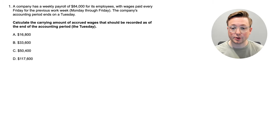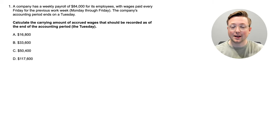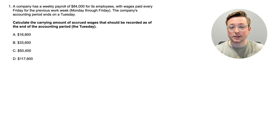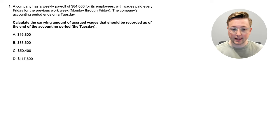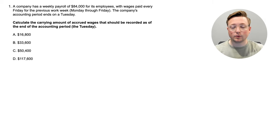Calculate the carrying amount of accrued wages that should be recorded as of the end of the accounting period, Tuesday. A company has a weekly payroll of $84,000 for its employees with wages paid every Friday for the previous work week, Monday through Friday. The company's accounting period ends on Tuesday. So we have to figure out how much wages they've accrued without having paid them as of Tuesday, which is likely month end. We're diving straight into the answer to learn what we're doing — we use questions to learn instead of watching hours of lectures.